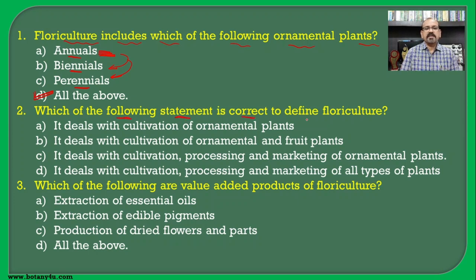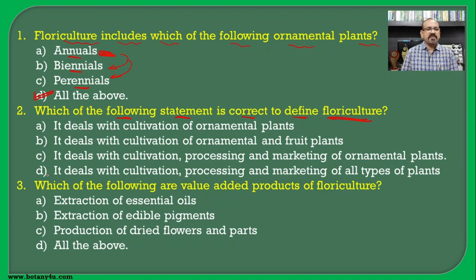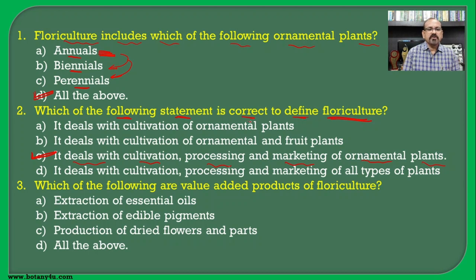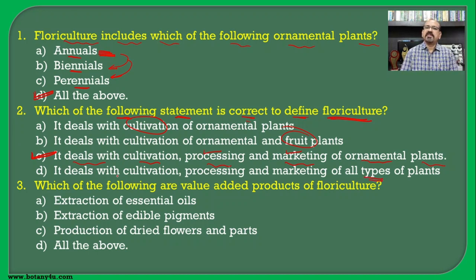Which of the following statements is correct to define floriculture? Floriculture is related to the cultivation of plants which bear flowers, and it is a branch of horticulture. The correct definition is that it deals with the cultivation, processing and marketing of ornamental plants. Hence C is the correct answer. It is not only related to cultivation but also to processing and marketing, and it is not related to fruit plants.